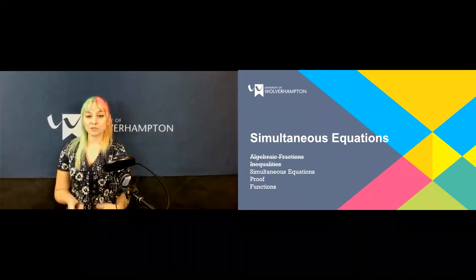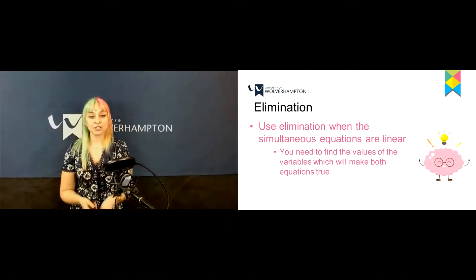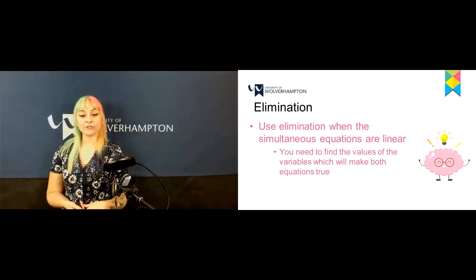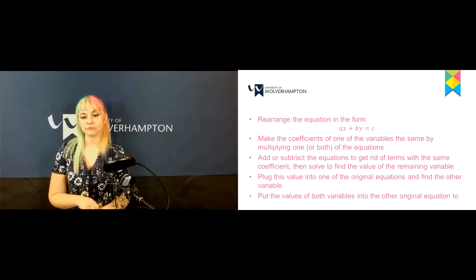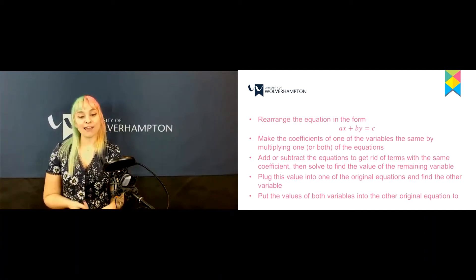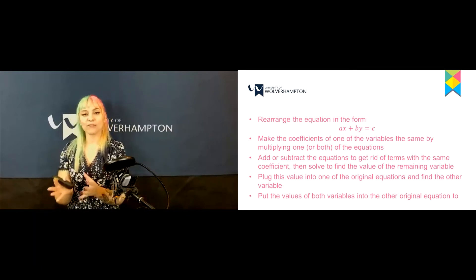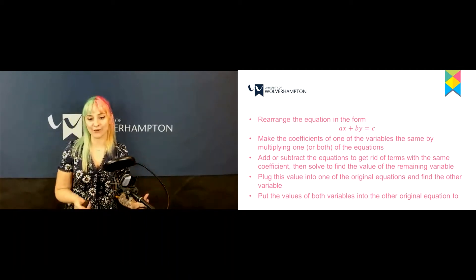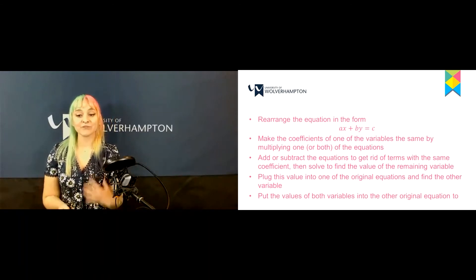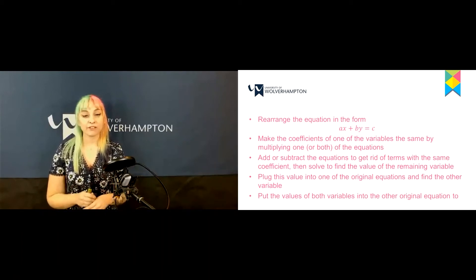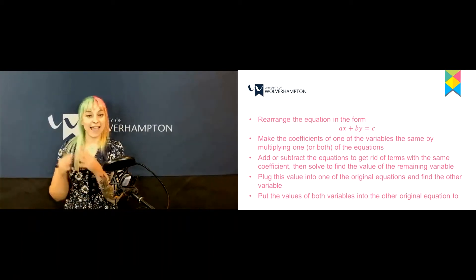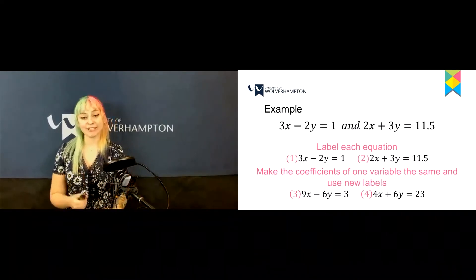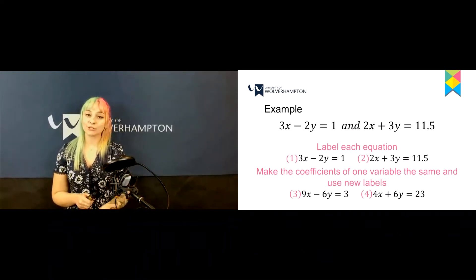The next topic is simultaneous equations. You may need to use elimination when the equations are linear — you find values of the variables that make both equations true. Rearrange each equation in the form ax + by = c, then make the coefficients of one variable the same by multiplying one or both equations. Add or subtract the equations to eliminate one variable. Looking at this example, we have 3x minus 2y equals 1 and 2x plus 3y equals 11.5.